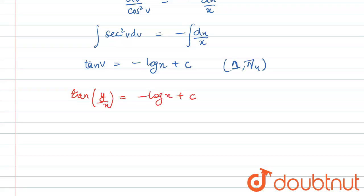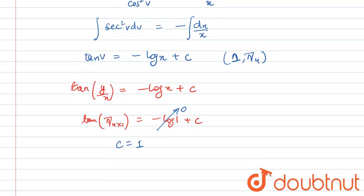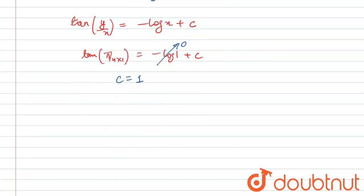Replace x = 1 and y = π/4: tan(π/4 × 1) = -log 1 + c. Since log 1 is 0 and tan(π/4) is 1, the value of the arbitrary constant c equals 1.